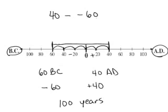So, I have 40 minus a negative. Minus a negative means the opposite of a negative, and the opposite of a negative is positive. So, 40 plus 60 is 100. Again, I get it's 100 years.